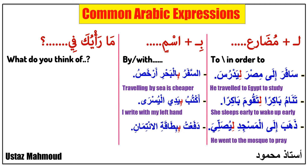Next sentence: 'Dafa'tu bi-bittaqat al-i'timan' — it means 'I paid with a credit card.' 'Dafa'tu' means 'I paid,' 'bi' means 'with,' 'bittaqa' means 'a card,' 'al-i'timan' means 'credit.' As you see, 'bi' is followed by 'bittaqa,' which is a noun.